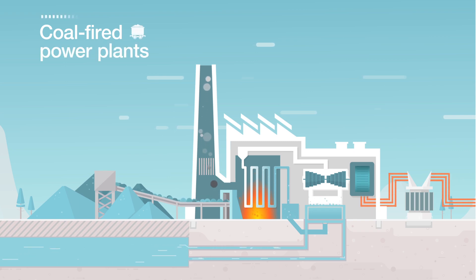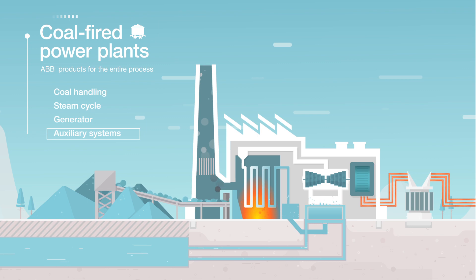For coal-fired power plants, for example, ABB supplies products for the entire process, from coal handling to the steam cycle, the generator, auxiliary systems, and the plant's complete electrical systems, including motor control centers and switchgear.